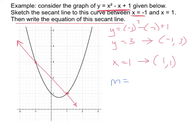My slope will be y2 minus y1 over x2 minus x1. So 1 minus 3 over 1 minus negative 1. That gives me a slope of negative 2 over 2, which means my slope is negative 1.